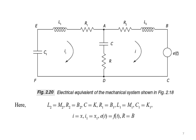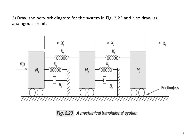Now let us take one more example. A mechanical system is given for which you need to write the analogous circuits. We have three masses M1, M2 and M3, springs K1, K2, K3 and K4, and dashpots B1 and B2. The wheel indicates it is frictionless so friction is not considered. Marking displacements in the direction of the applied force, we have three displacements: x1, x2 and x3.